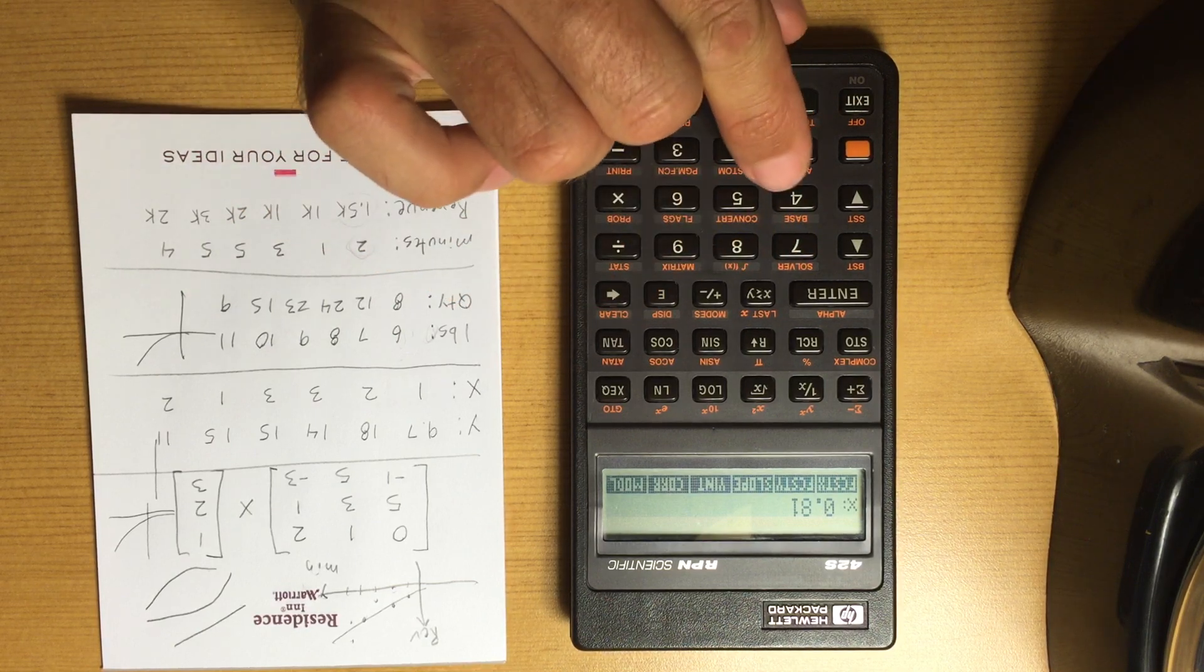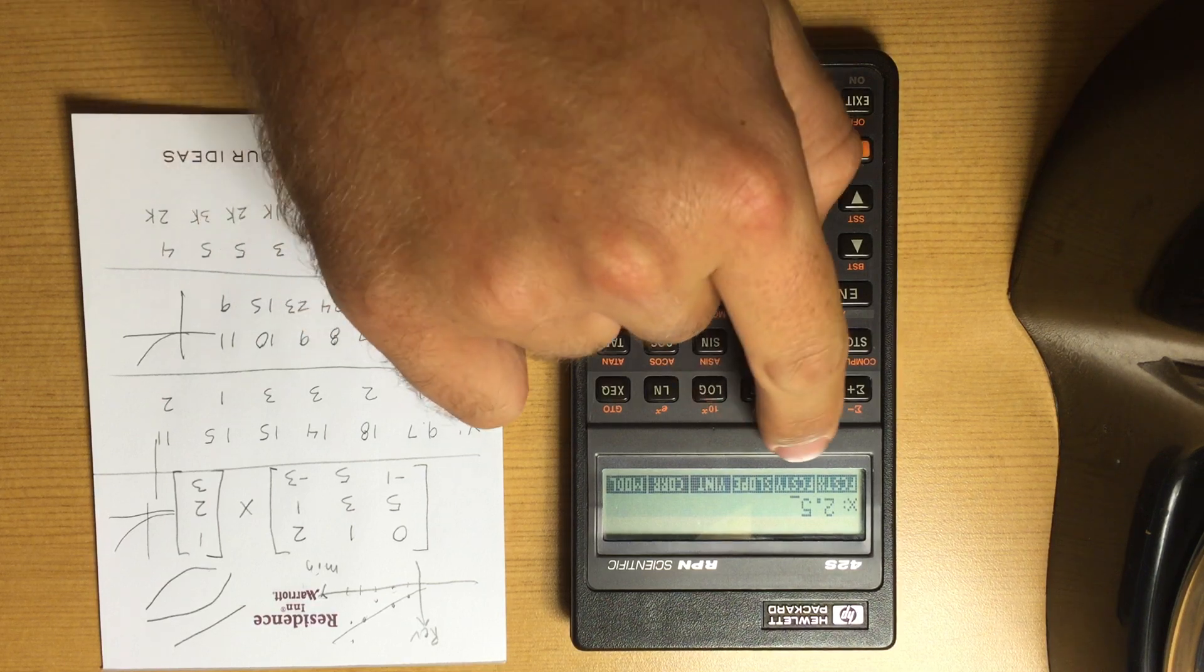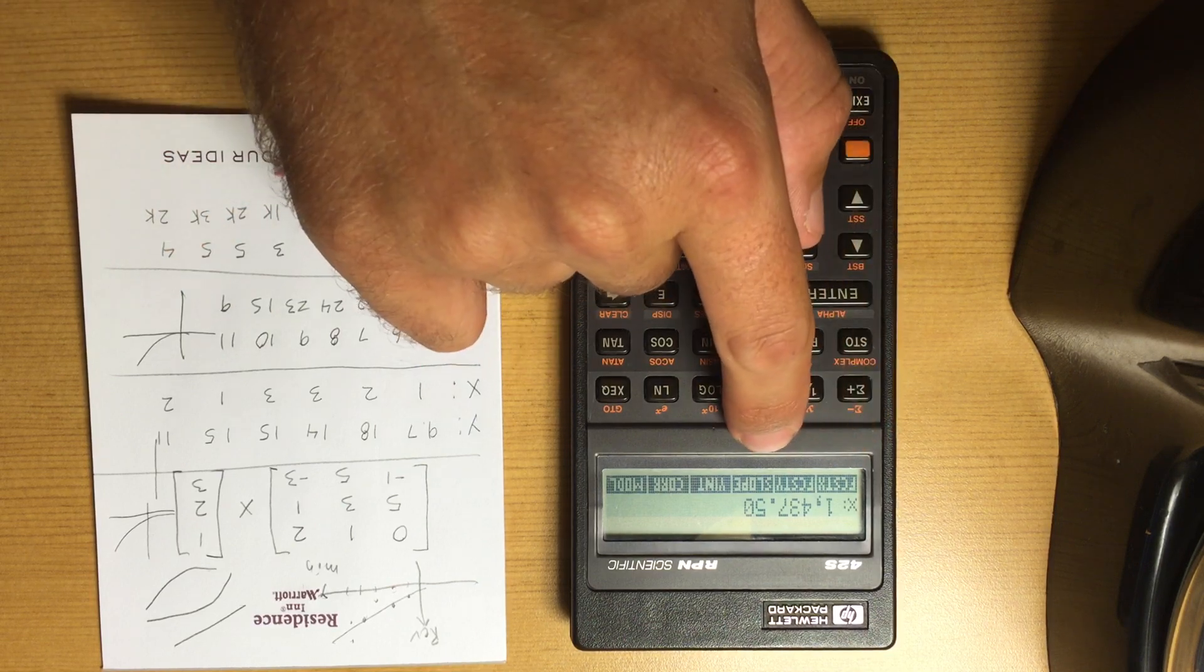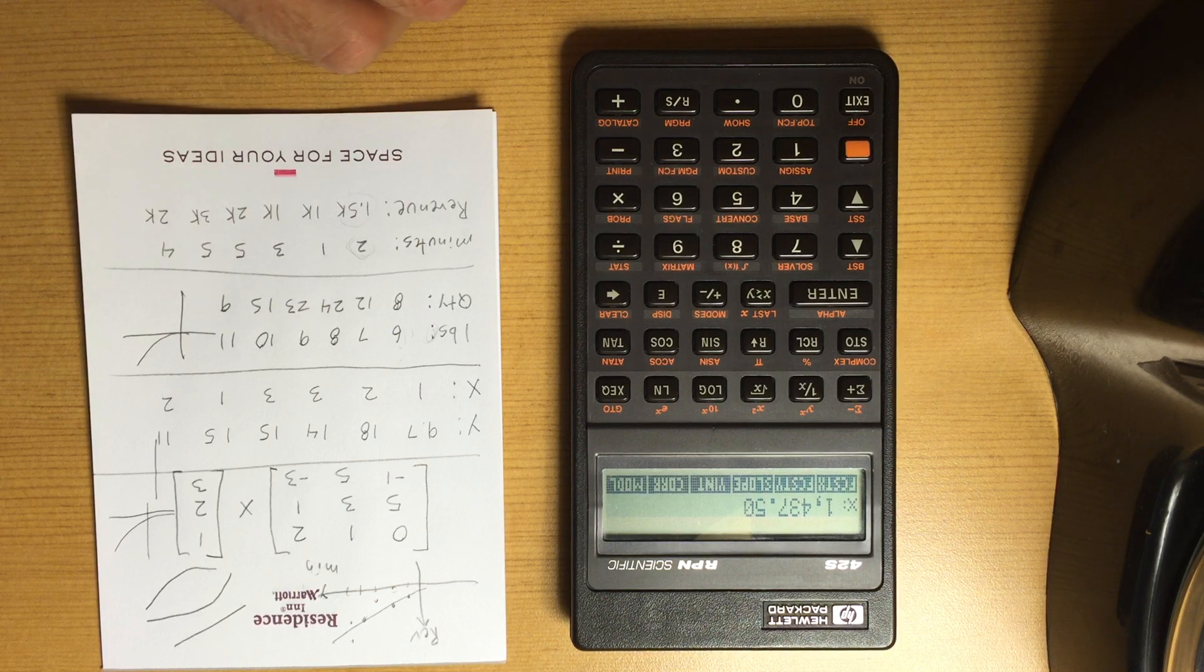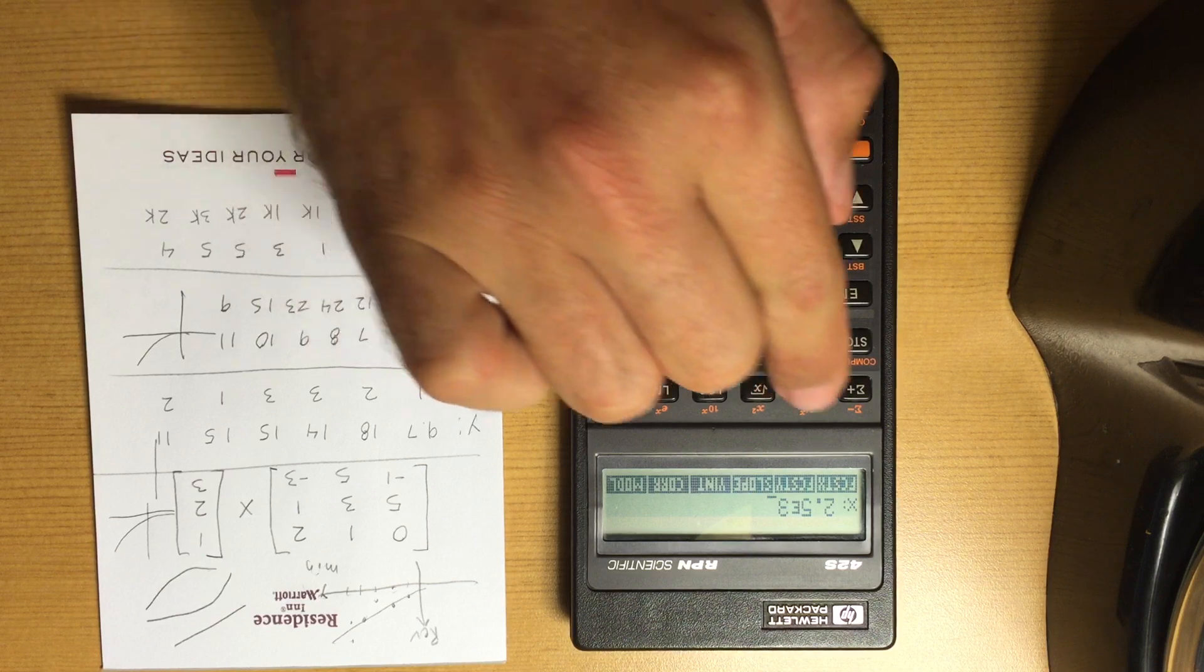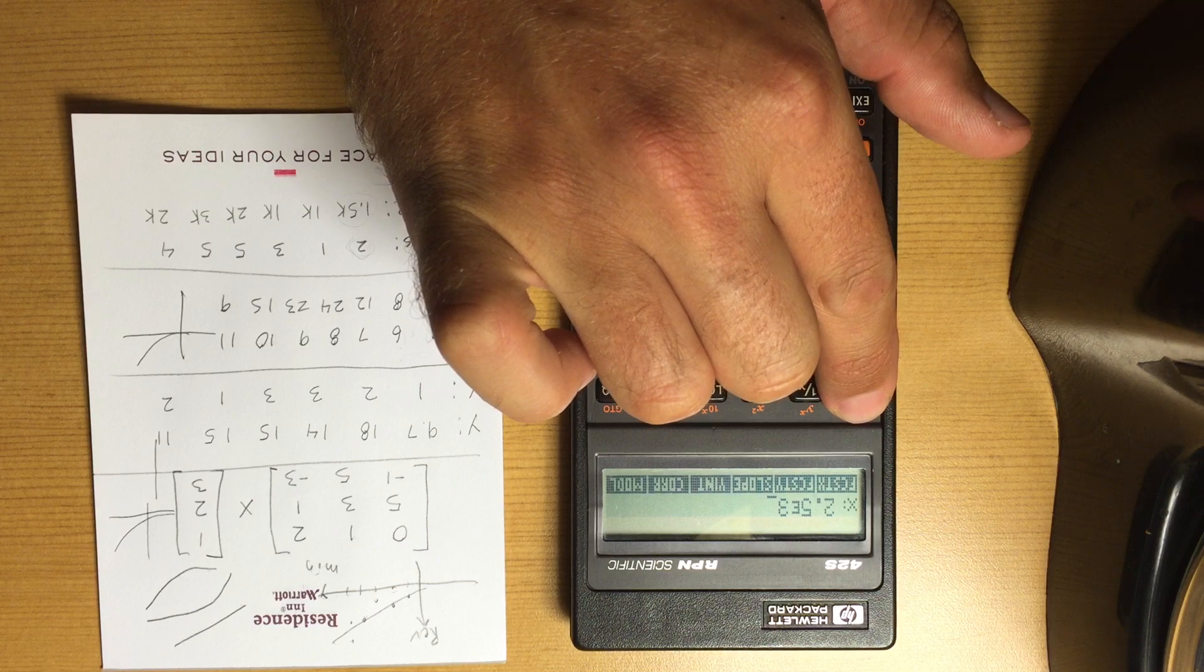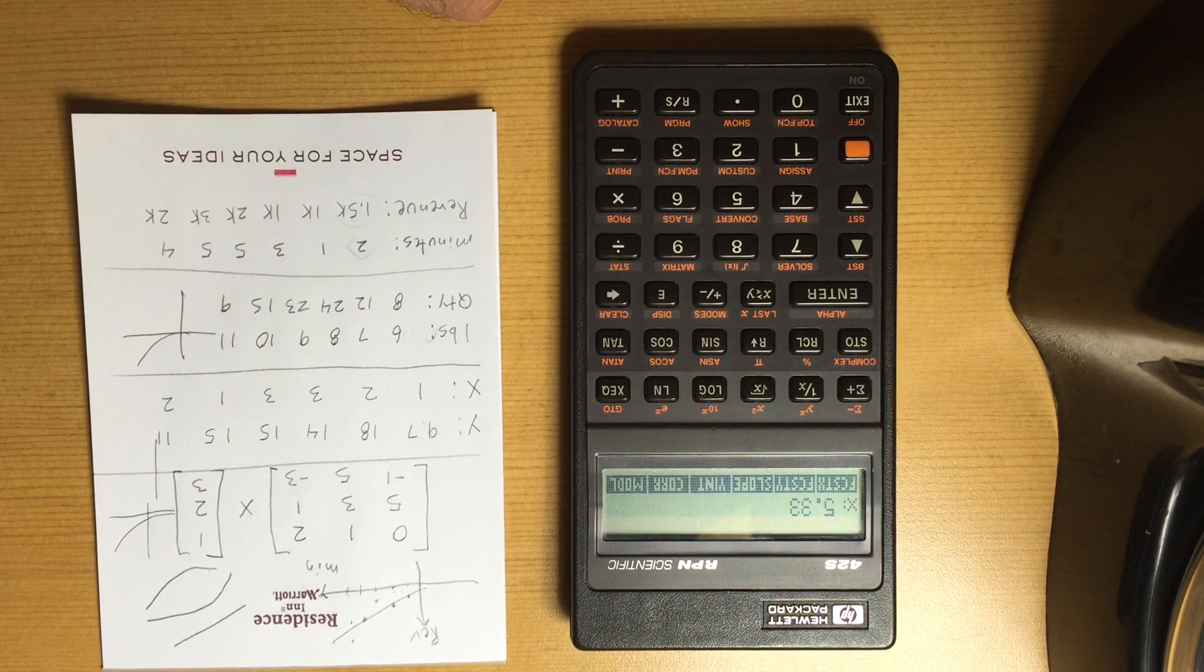But now if we enter, say, 2.5 minutes and we want to find out what Y would be, we can say okay, for 2.5 minutes we'd get about 1500 according to this model curve fit. We can also say, well, we want to get 2500 dollars, and then how many minutes of advertising do we have to do to get that? Find X based on that Y value—about five and a third minutes of advertising.